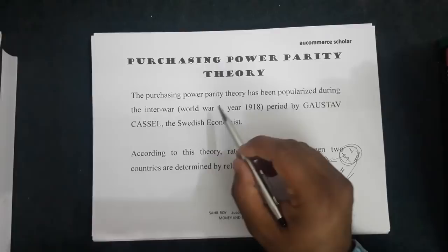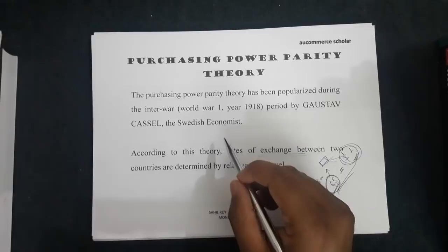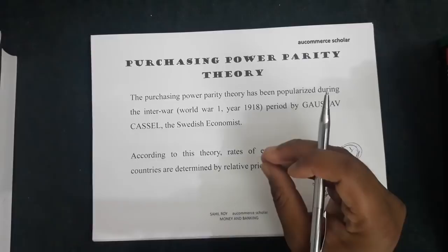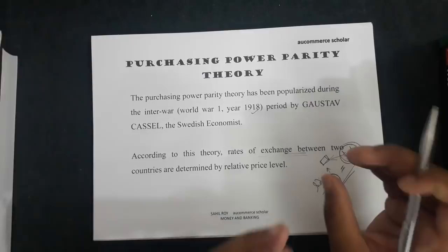The Purchasing Power Parity Theory has been popularized during the interwar period — that is, around World War I, between 1914 and 1918 — by Gustav Cassel, the Swedish economist. It was during this first world war period that Gustav Cassel gave the Purchasing Power Parity Theory, and at that time this theory was popularized.